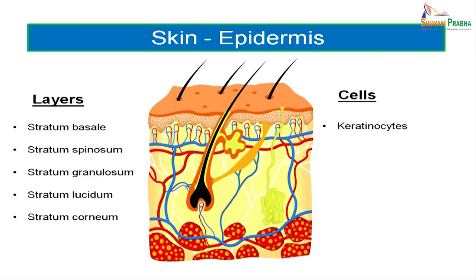Coming to the cells present in skin. The majority of the population are keratinocytes, present throughout all five layers. They start in the stratum basale, accumulate keratin as they transit through the layers, and their cell membranes become indistinct as they finally shed off with the keratin to form the stratum corneum. Keratinocytes are small polygonal cells with a few dendritic processes and form the majority of the skin's cell population.